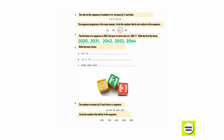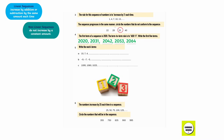Question number 5. Write the next 4 terms in these linear sequences. Linear sequences increase by addition or subtraction by the same amount each time. Non-linear sequences do not increase by a constant amount.